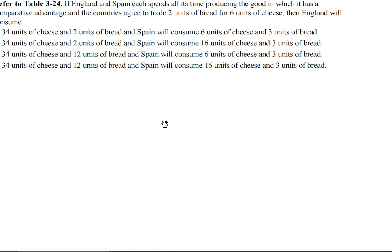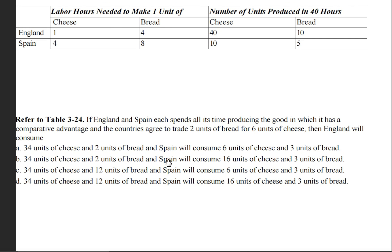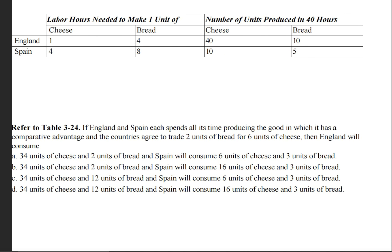So now that we've gotten that out of the way, we can determine how much each country will consume once it begins trading. Let's figure out how much England will consume. England will consume the difference of what it traded and what it got from the trade. So it's going to specialize in making cheese, and give to Spain a certain amount of cheese, and here it was told it would be 6. So England will end up consuming what they have left, which is 34 units of cheese, in addition to the 2 units of bread that it received.